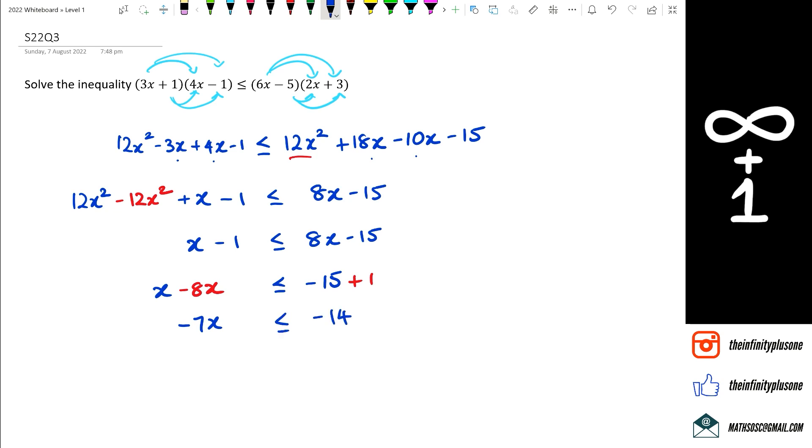And I've got to get rid of the negative 7. So of course negative 7 is getting multiplied, so on the other side it is going to get divided. And remember that whenever you divide by a negative number, you've got to switch the signs. So the sign is actually going to switch over, which means our final answer is going to be x is greater than or equal to 2.